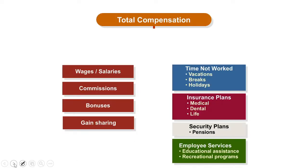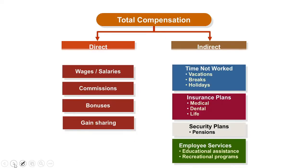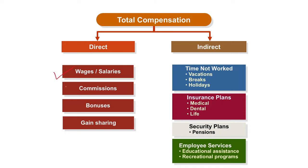Let's talk about the various kinds of compensations which are available. There is direct compensation and there is indirect compensation. When we say direct compensation, wages, salaries, commissions, bonuses, and gain sharing all form part of direct compensation. So if the person is working, he is getting directly paid.